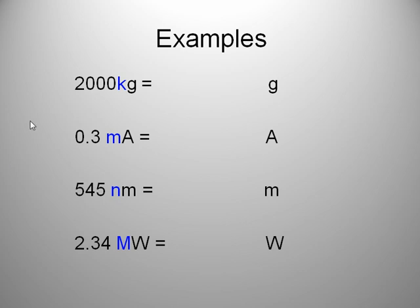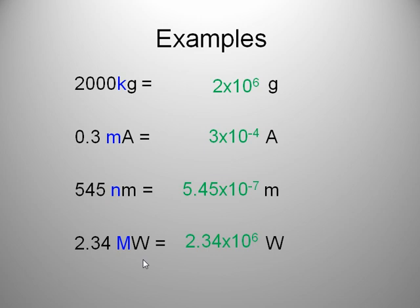Okay, so here's the examples. 2,000 kilograms, that's 2 million grams, 0.3 milliamps in scientific notation, 3 times 10 to the minus fourth, 545 nanometers in scientific notation there, and 2.34 megawatts. Mega is a million.